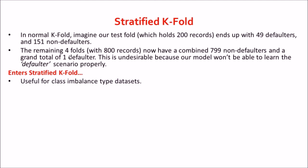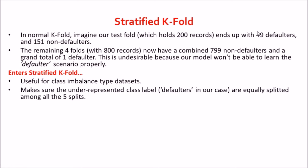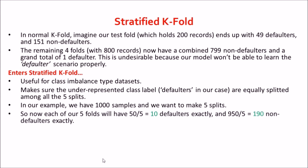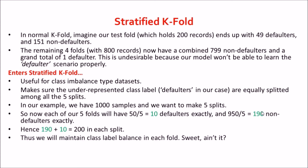Stratified k-fold is extremely useful for class-imbalanced datasets like ours, where 950 are non-defaulters and only 50 are defaulters. What stratified k-fold ensures is that the underrepresented class — the defaulters — is equally split among all 5 folds. In our example with 1000 samples and k=5, each fold will have exactly 50/5 = 10 defaulters and 950/5 = 190 non-defaulters, totalling 200 per fold. This maintains class-level balance in each fold, which is where stratified k-fold trumps normal k-fold.